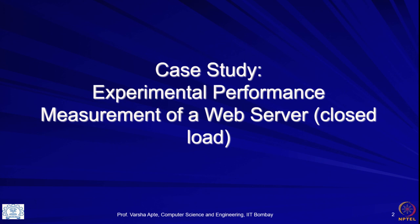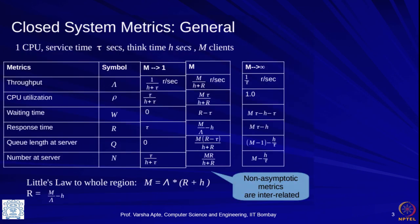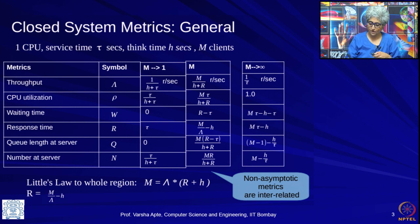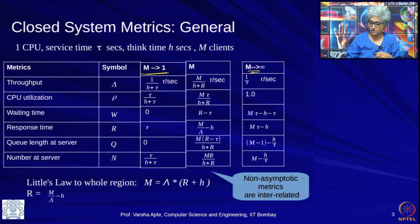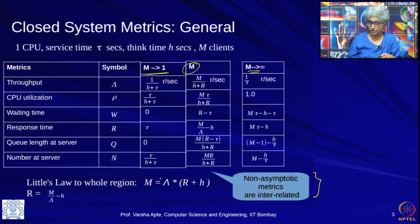In the previous lectures we were looking at closed systems and just like we did for open queuing systems, we are going to go through a real measurement study of a web server. This is a recap for you to look at all the formulae of the closed systems that we studied. We have studied the low load asymptote for when the number of users or clients is going towards 1, then when the number of clients goes towards infinity, and then for in between the asymptotes. Just a reminder that in the case of the non-asymptotic matrix, we do not know yet how to calculate each of these independently — these are all interrelated.